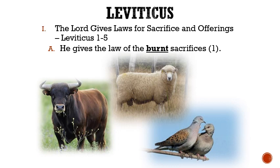Each animal was to be healthy and without blemish, which meant aesthetically pleasing. The priests would then put their hand upon the offering's head, kill the animal, sprinkle the blood on the altar by the door of the tabernacle, skin or de-feather the animal, cut it into pieces, and burn it upon the altar over the wooden flames. The remnant of this offering was to be Aaron and his sons.